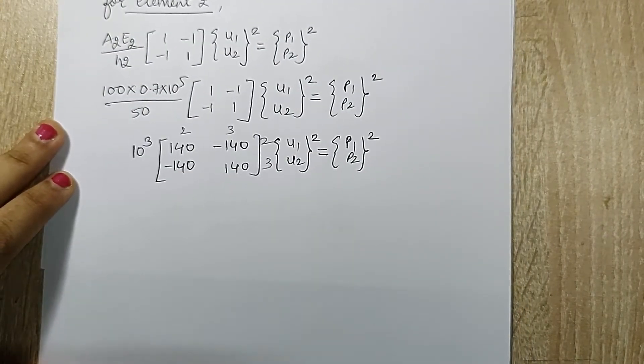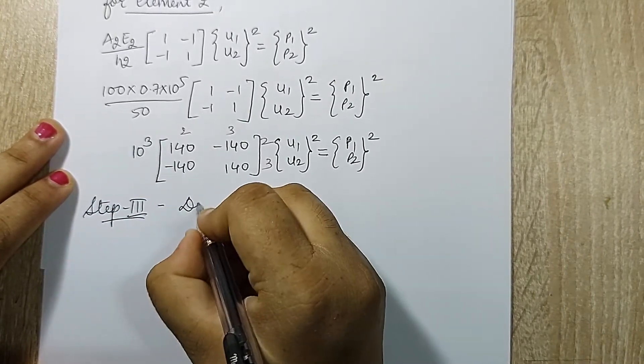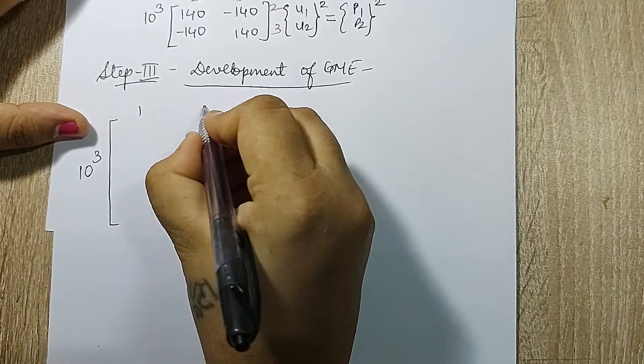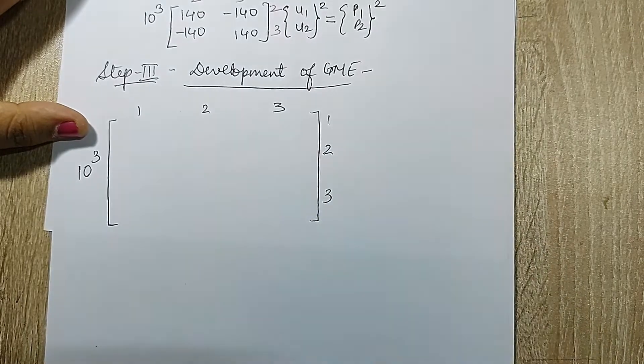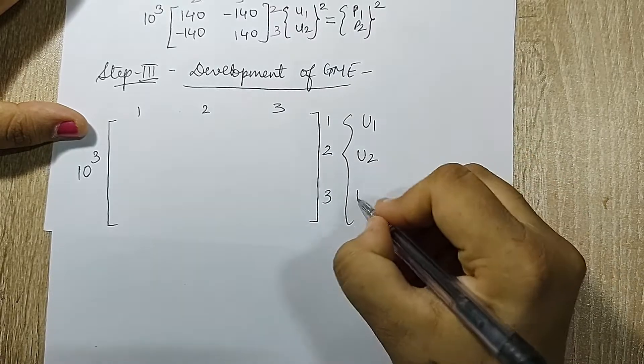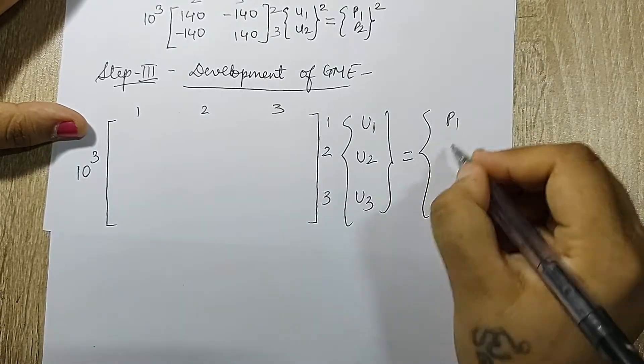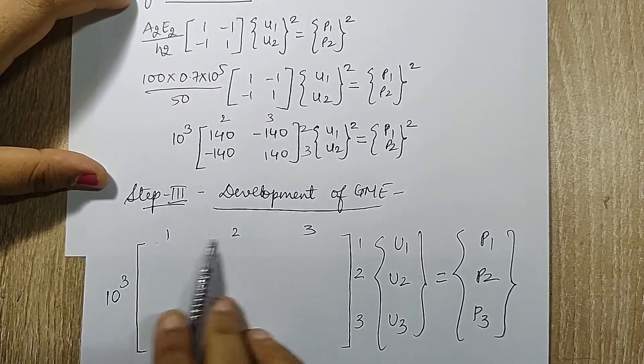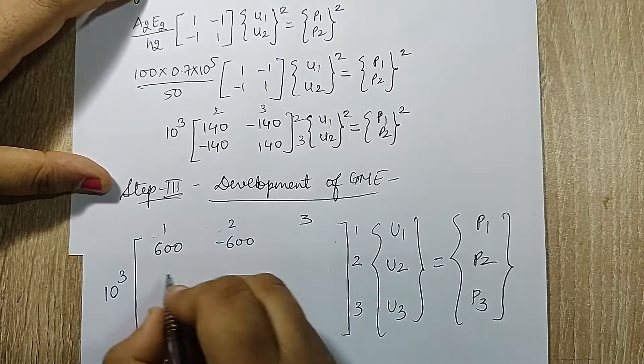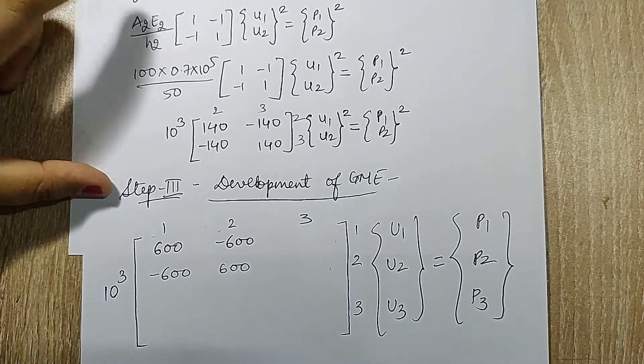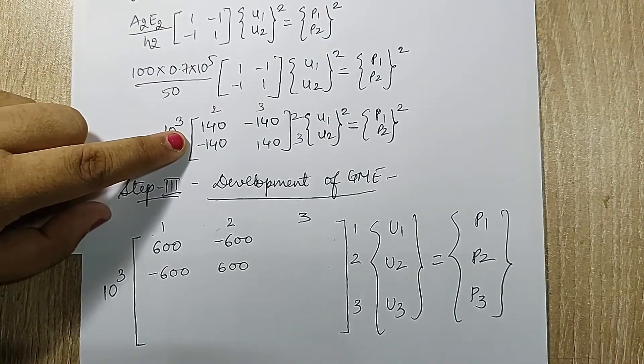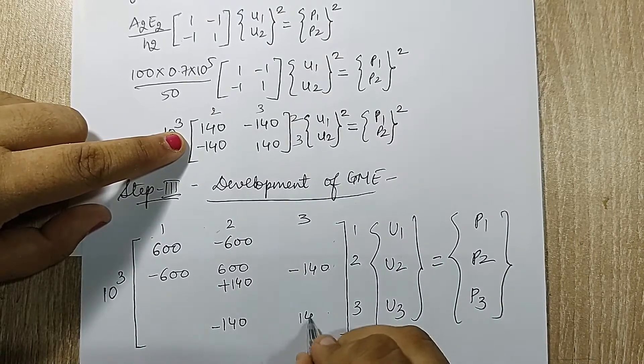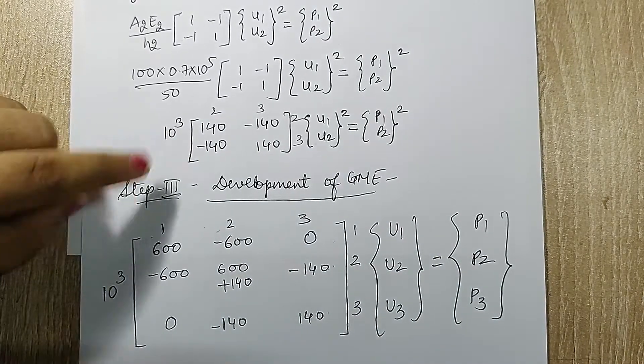Next I will form the GME using element 1 and 2 which is my step 3, development of GME. I will first write 10 raised to 3 term outside. Then I have nodes 1, 2, 3 and variables u1, u2, u3 equals p1, p2, p3. For element 1, it is between node 1, 2, 1, 2, value is 600. So I will place 600, minus 600, minus 600 and 600. For element 2, the value is between node 2, 3, 2, 3, value is 140. So I will place here plus 140, minus 140, minus 140 and 140. There is no element between node 1 and 3, so these two terms are 0.